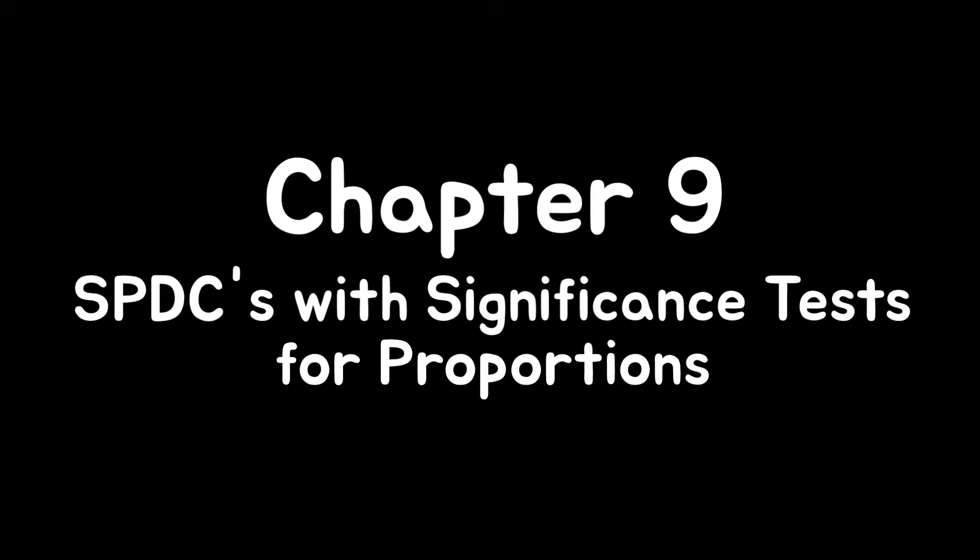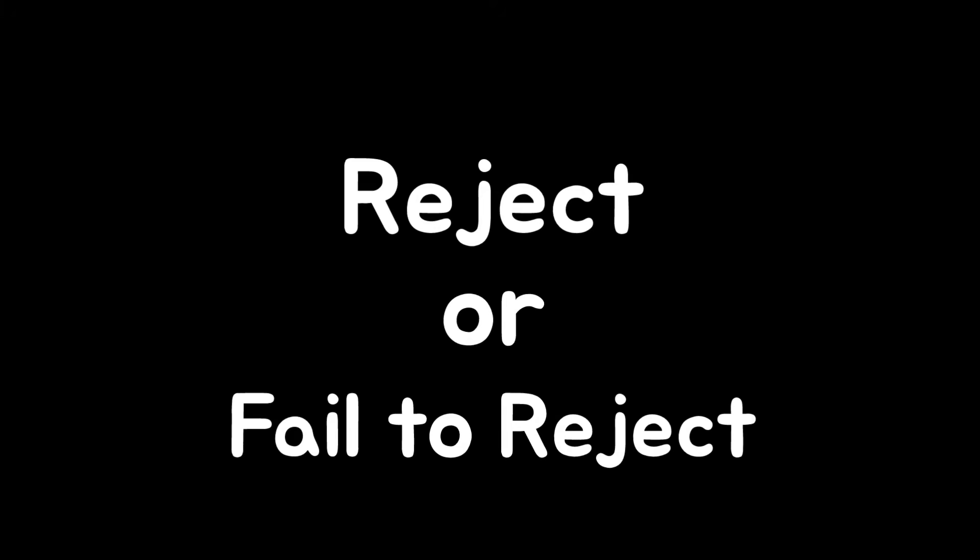Chapter nine is a bunch of state, plan, do, concludes — this time with significance tests and organized writing to reject or fail to reject the population proportion or difference in two. Chapters ten and eleven are literally chapters eight and nine, but with means.